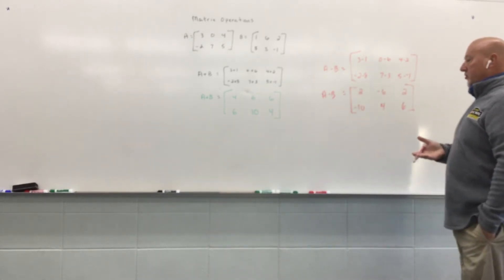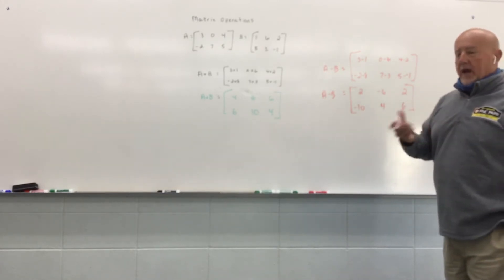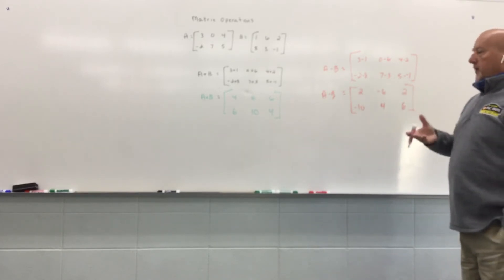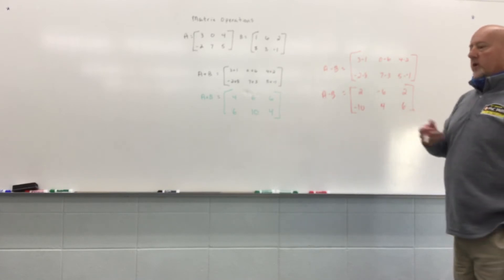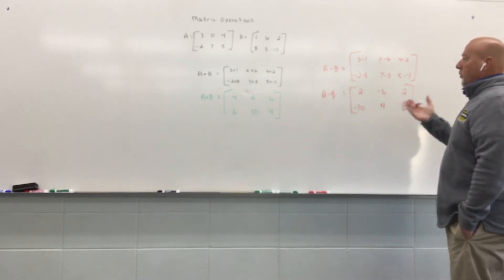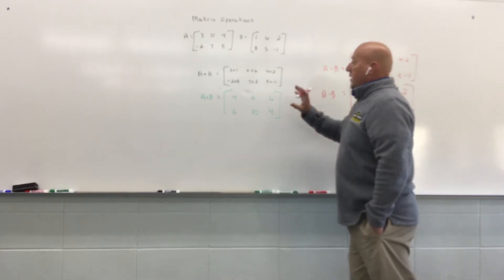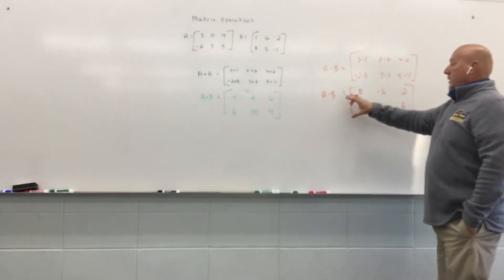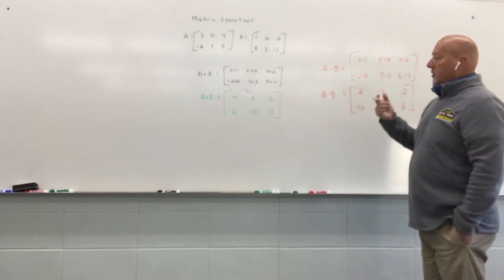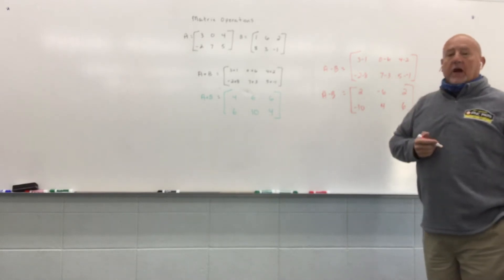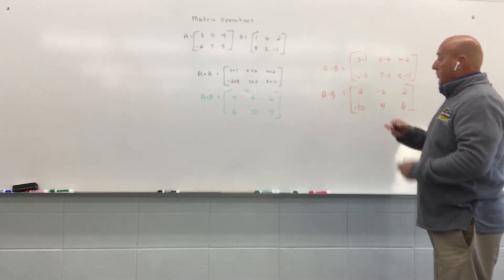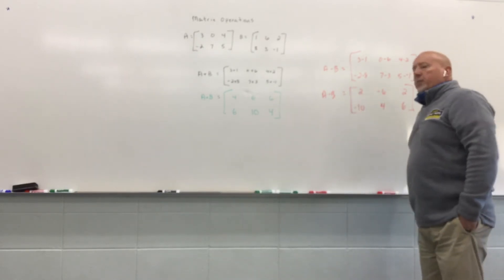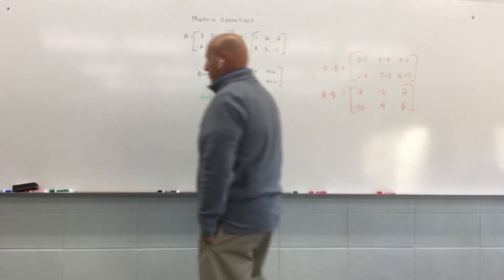If the matrices do not have the same size, they can't be added and subtracted. Take note also that some of the same properties that apply to just regular addition and subtraction will apply to this also. A plus B is commutative, so it wouldn't matter which way you add them. A minus B is not commutative because B minus A would give you different values when you subtract. Other than that, we can perform the same operations or the same properties that are going to apply to matrix addition and subtraction.